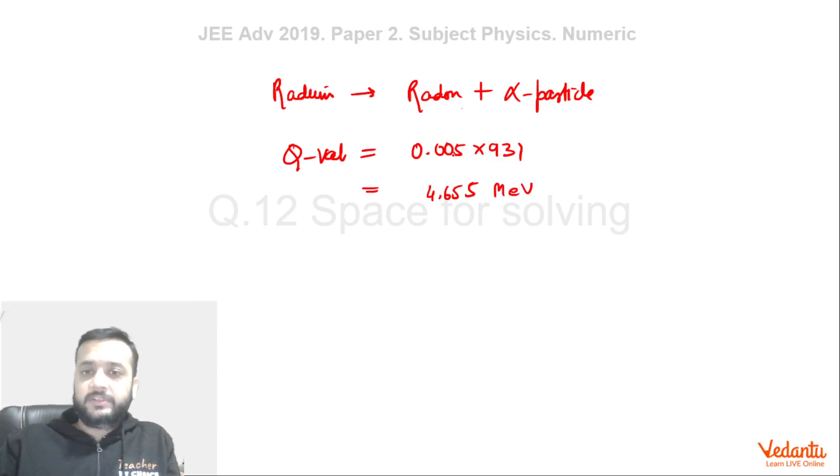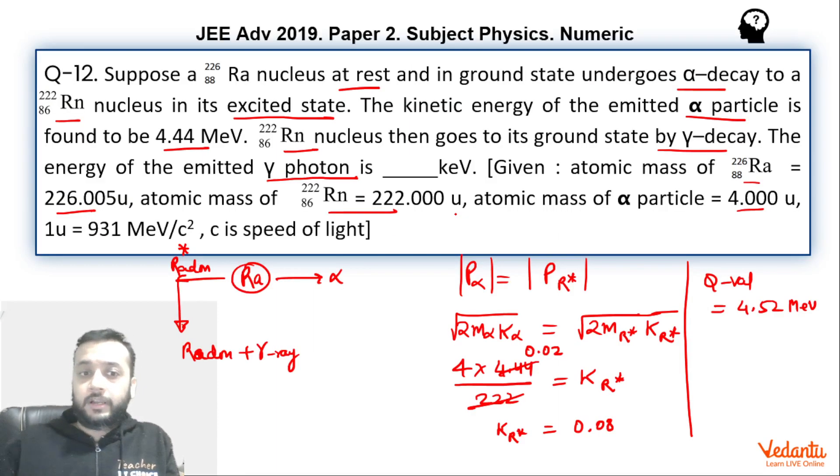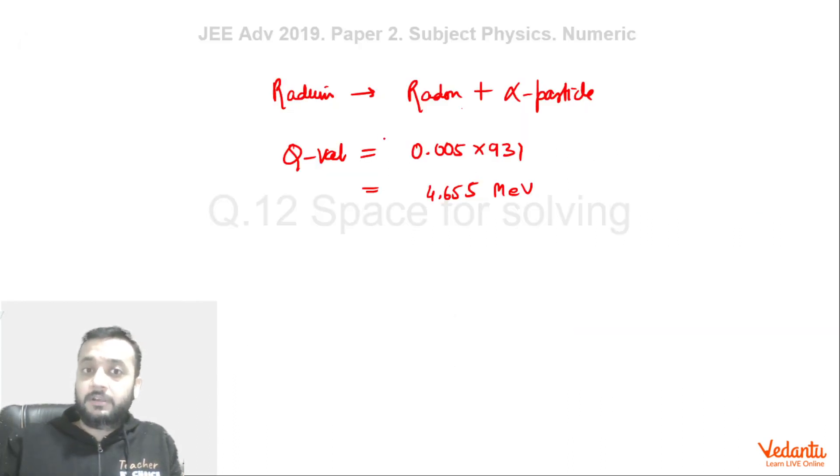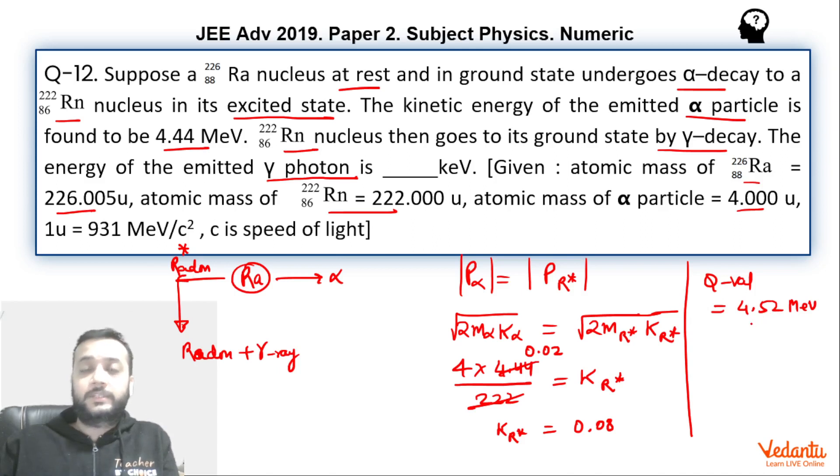Now you see, if radon is formed in the ground state, Q value is 4.655. When radon is formed in the excited state, Q value is 4.52, that means slightly less. That means when radon is formed in excited state, it is having more energy, of course it must have more energy, that's why Q value is less. So when radon comes back to ground state, it emits gamma ray. That gamma ray will be of course the difference in the energy of the radon in the ground state and the excited state, which is the difference between the Q values of these two reactions.